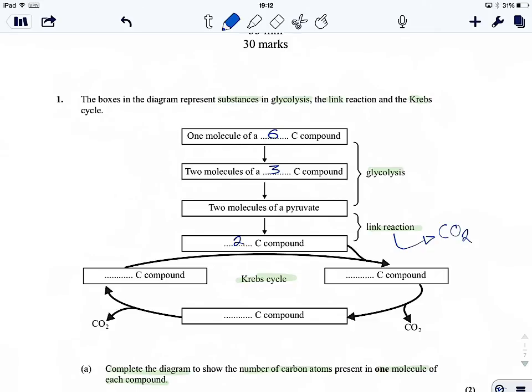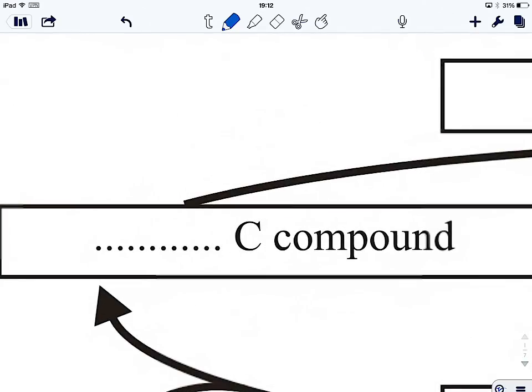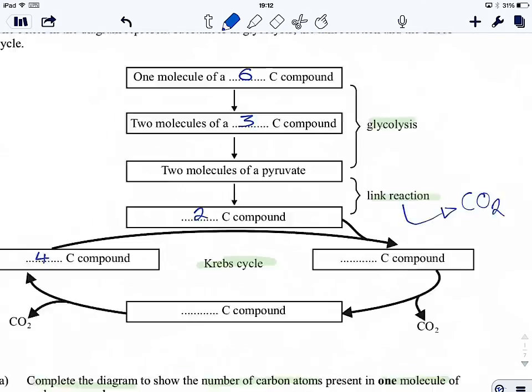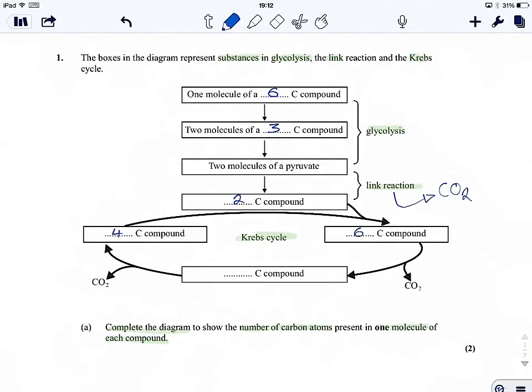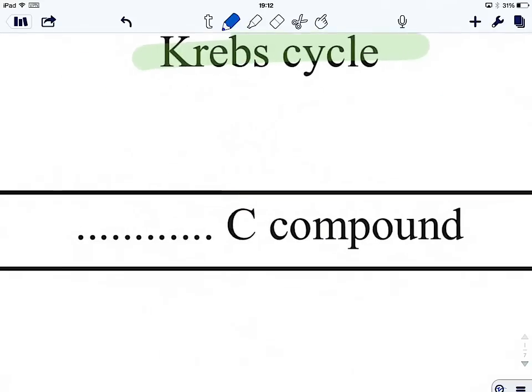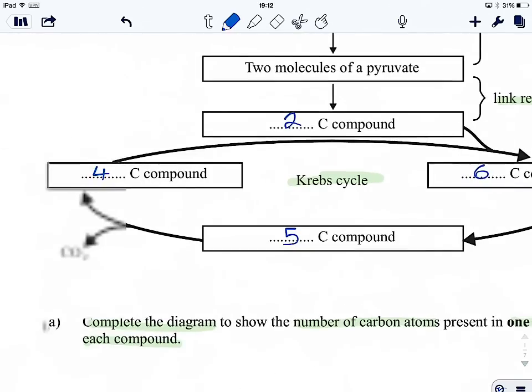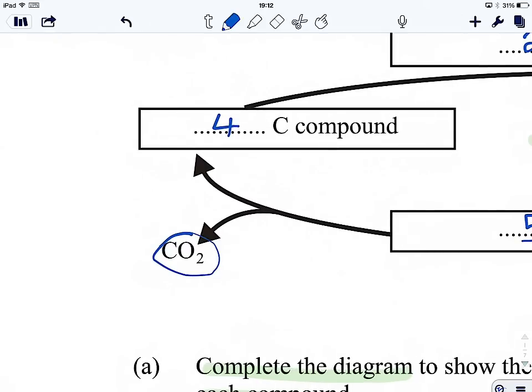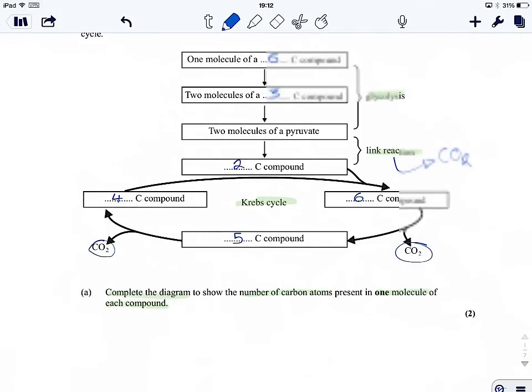Now, the Krebs cycle involves acetyl-CoA joining with a four-carbon compound to make a six-carbon compound. Four plus two is six, there we go. And then there's two stages of decarboxylation. So one carbon dioxide is removed here, which gives us a five-carbon compound. And then another carbon dioxide is removed here, taking us back around to our four-carbon compound from earlier. Now, be aware that the current AQA specification for this does not require knowledge of this stage. It's only the four-carbon and the six-carbon you don't need to know. So don't worry too much about the five-carbon compound, although it is kind of useful because it shows where the carbon dioxides are evolved from. But, hey, it's not too much to worry about.